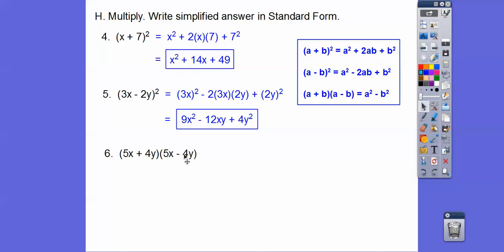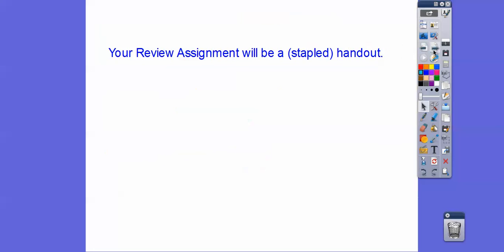So this one, these are conjugates. These are the same binomial where 1 is a plus and 1 is a minus. So when you're multiplying these conjugates together, we just square them and subtract. So we're just going to square the 5x and square the 4y and subtract those. We get that. Easy enough.